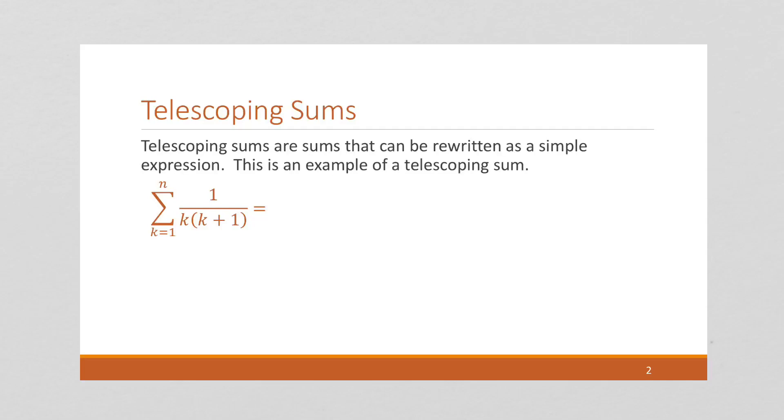A telescoping sum is a sum that can be rewritten as a simple expression. And there's several of them, we'll see more later in the semester, in later videos when we cover proofs by induction. But right now, we're going to work on this example. We're going to take this sum from k equals 1 to n of 1 over k times k plus 1, and we're going to simplify this.